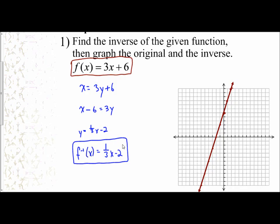Now we're going to graph the other function, the actual inverse, which is 1 third x minus 2. So I have a negative 2 for my y-intercept. And a slope of 1 third. So up 1 over 3, up 1 over 3.